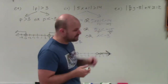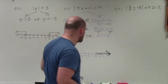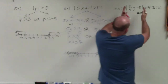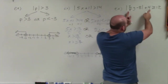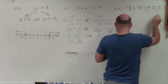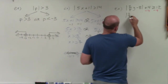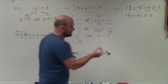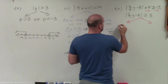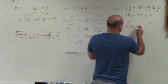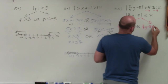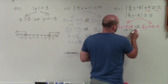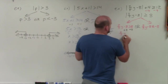The main mistake students make with this next problem is not isolating the absolute value before solving. You can only apply the two-case method when the absolute value is isolated. Here I have the absolute value of 2 fifths y minus 8, plus 4, is greater than or equal to 12. So the first thing I do is subtract 4 from both sides. That gives me the absolute value of 2 fifths y minus 8 is greater than or equal to 8. Now it's isolated, so I can create my two cases.